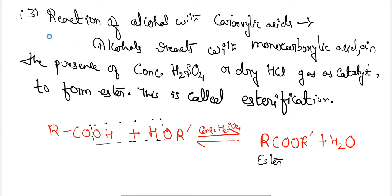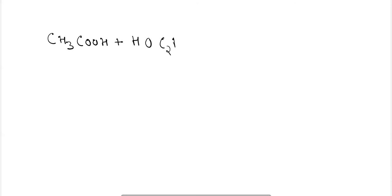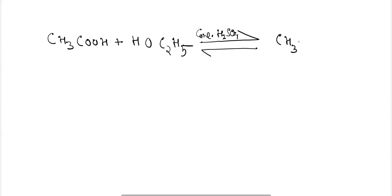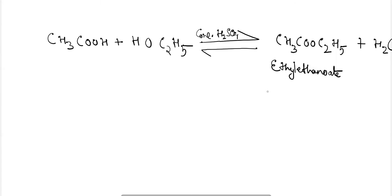For example, CH₃COOH (acetic acid) reacting with ethanol in the presence of concentrated H₂SO₄ produces CH₃COOC₂H₅ plus H₂O — that is ethyl ethanoate, also called ethyl acetate. The reaction is reversible in nature, and the equilibrium can be shifted towards the forward direction by removing water as soon as possible.